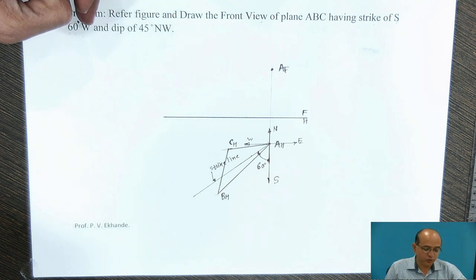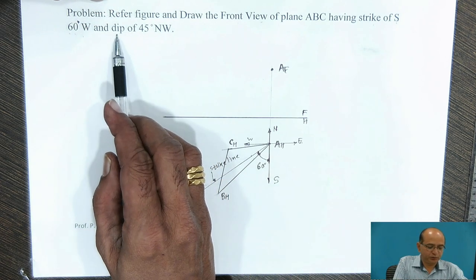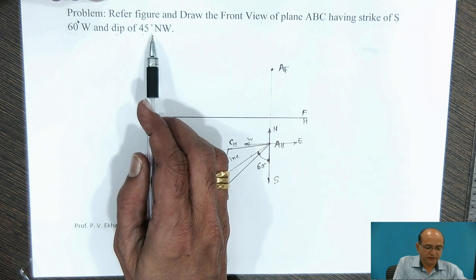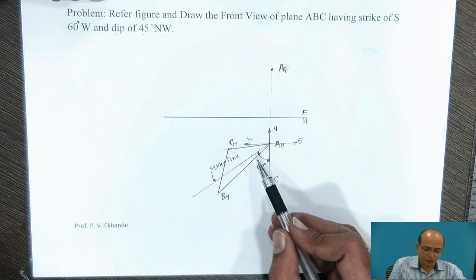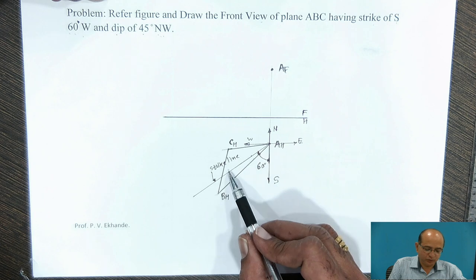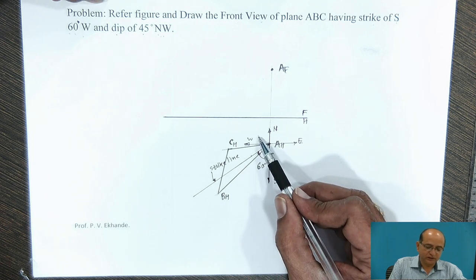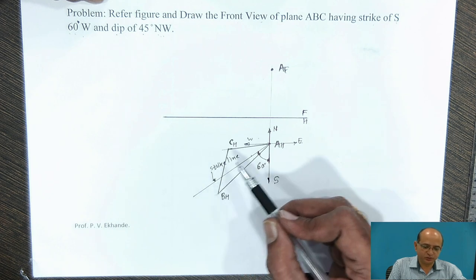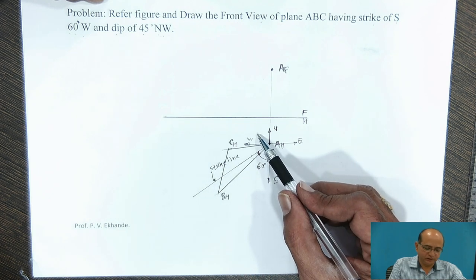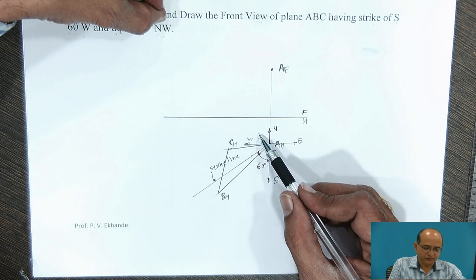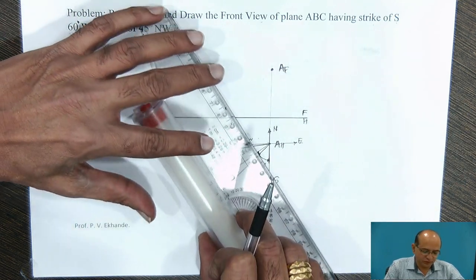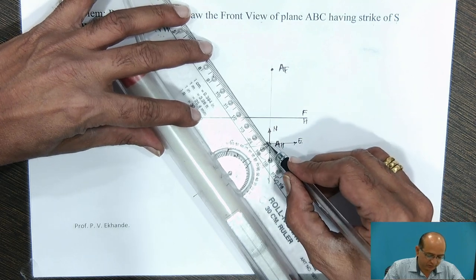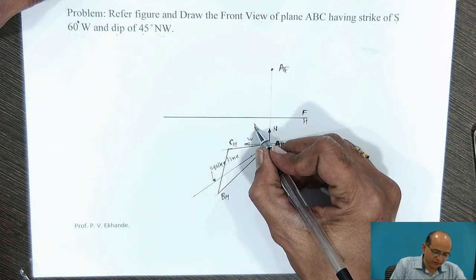Now we have to complete the edge of the plane. The other data given is a dip angle of 45 degrees in the north westerly direction. This direction is to be indicated in the top view as a line perpendicular to the strike line, and in that direction the plane should have a downward inclination — the plane will be dipping towards the ground in that direction.